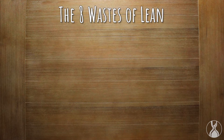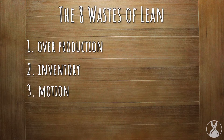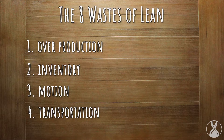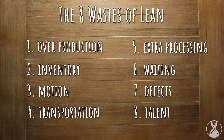There are eight wastes in Lean: overproduction, inventory, motion, transportation, extra processing, waiting, defects, and talent. Let's look at each of these one by one.